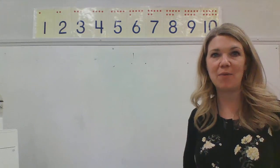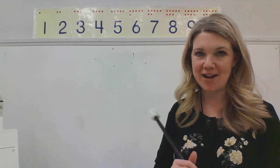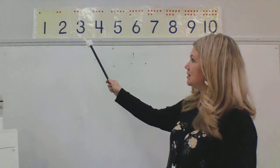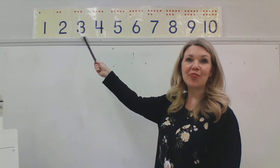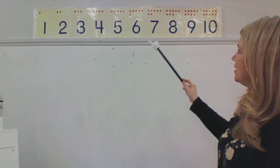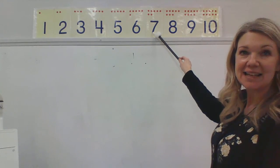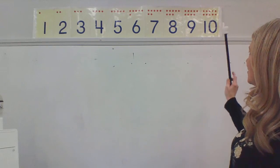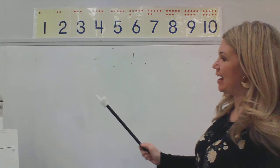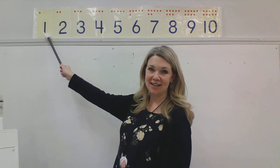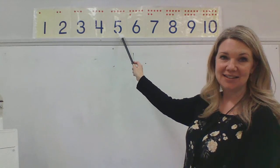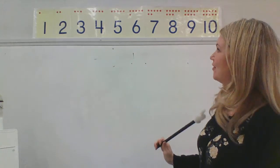Now I'm going to point to one of those numbers and I want you to tell me what number it is. Are you ready? Okay, my friends, let's look. What number is 3? Good job. The next number — what number is 7? Very nice. What number is 10? Good. What number is 1? Good job. What number is 5? Very nice.